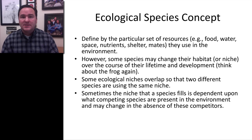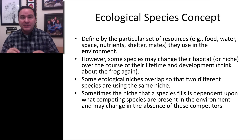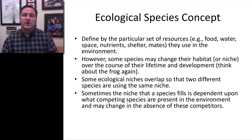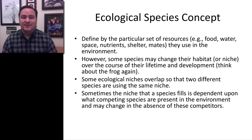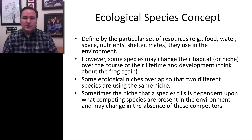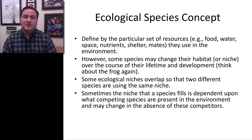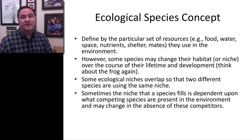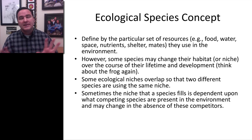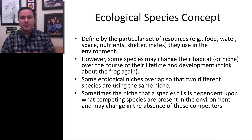As you might guess, the best approach is to use all possible information and potentially apply multiple species concepts to arrive at a consensus view of how many species there are. There's no single concept that is best in all cases. The most commonly used are the biological and phylogenetic species concepts, but other concepts also have value and may be informative in particular situations.